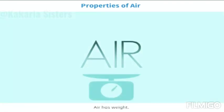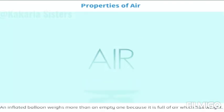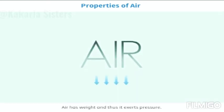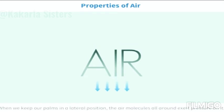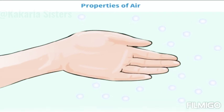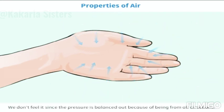Air has weight. An inflated balloon weighs more than an empty one because it is full of air which has weight. Air has weight and thus it exerts pressure. When we keep our palms in a lateral position, the air molecules all around exert pressure on it. We don't feel it since the pressure is balanced out because of being from all directions.